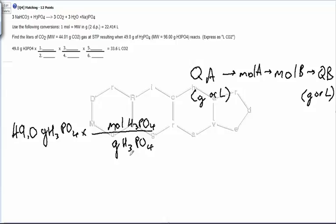The relationship between moles of H3PO4 and grams of H3PO4: one mole of H3PO4 is equal to the molecular weight of H3PO4, which is given as 98.00 grams. So that's the relationship - one mole of that is equal to 98.00 grams of that.